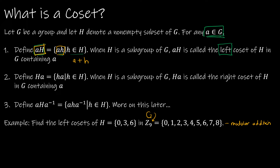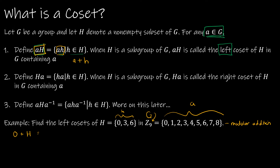We take each element A and add all elements of H on the right. Starting with 0 plus H: 0 plus 0 is 0, 0 plus 3 is 3, 0 plus 6 is 6. Then 1 plus H: 1 plus 0 is 1, 1 plus 3 is 4, 1 plus 6 is 7.